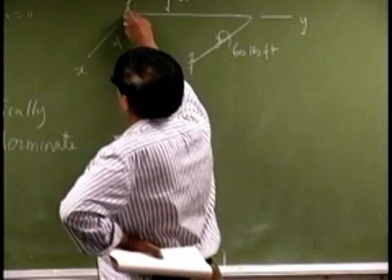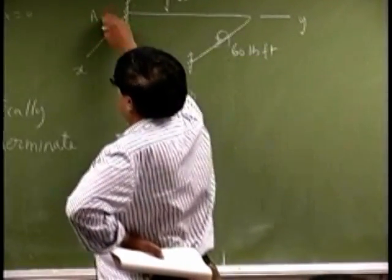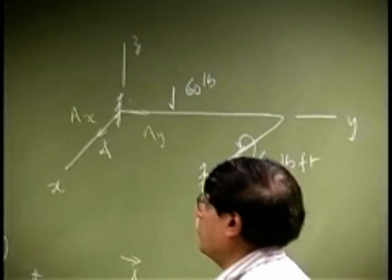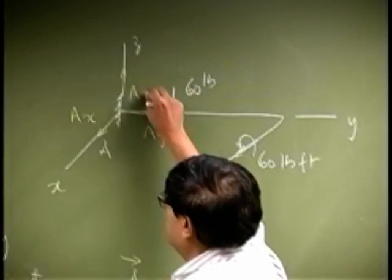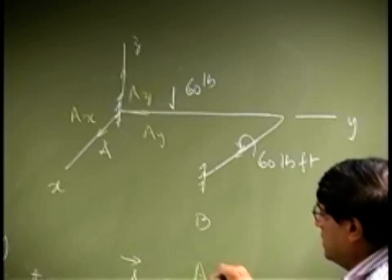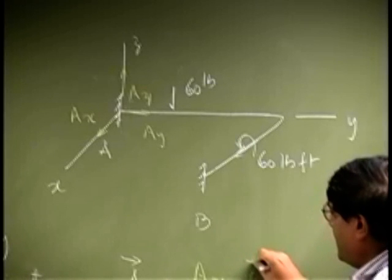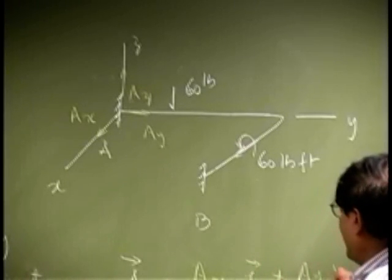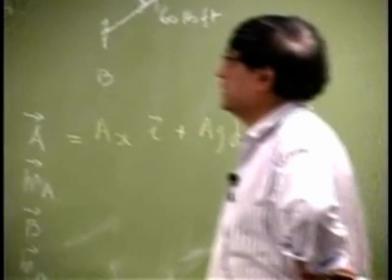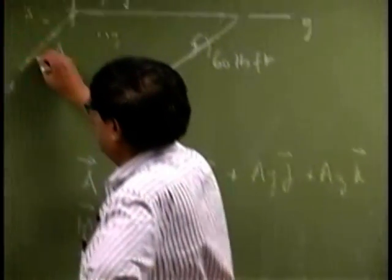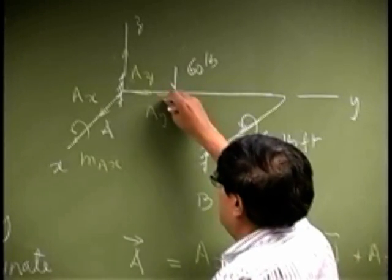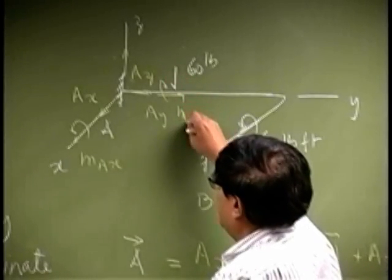Then you look at the actual components. There is component Ax, non-zero component, then you have a non-zero component Ay, then you have a non-zero component Az. So this force here has component Axi, then you have Ayj, then you have Azk. Now in addition to this, you will have a couple which is MAx.